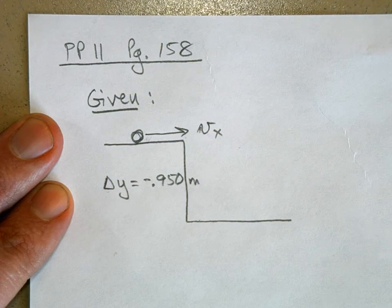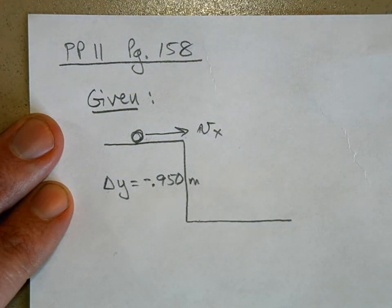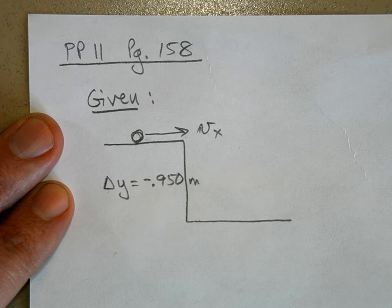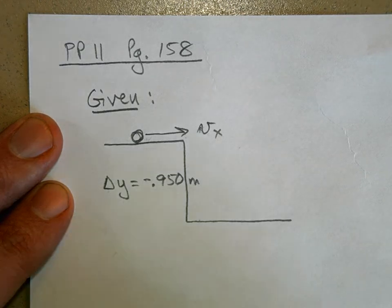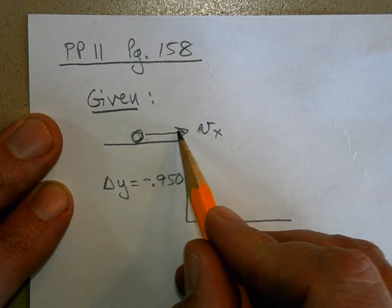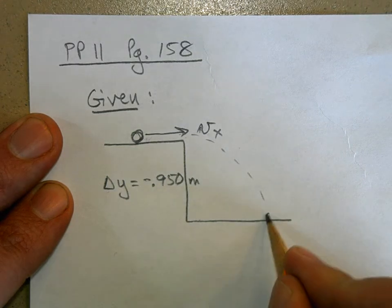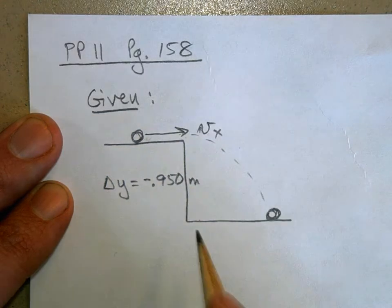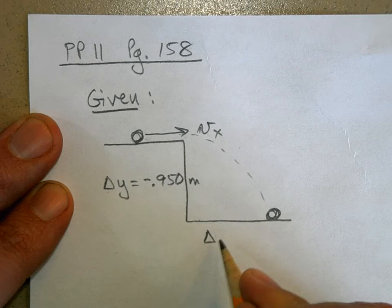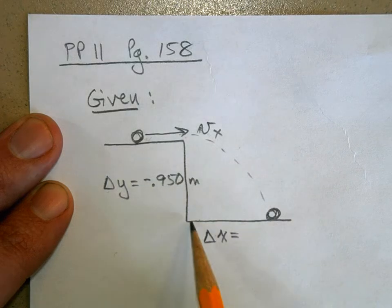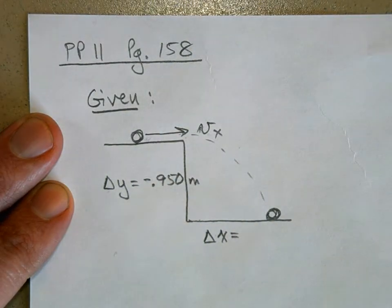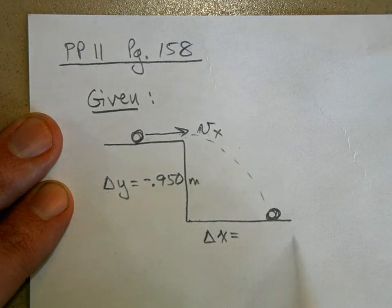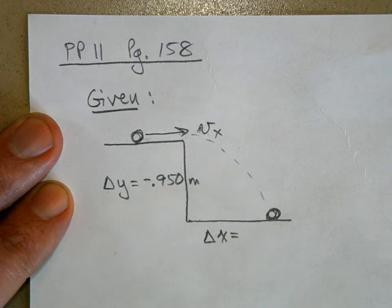Then it rolls off and hits the ground 0.352 meters from the edge of the table. So once it leaves the table here, it goes like this and hits the ground right there. And this is Δx, right? This is how far the ball rolled or fell, 0.352 meters.